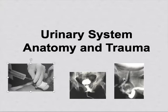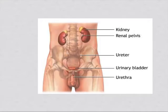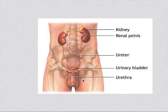Let's begin. I will talk a little about anatomy — just an overview since you already covered it. We know the anatomic structures: kidneys, ureters, bladder, and prostate, which is in males. In males there is also testes, vas deferens, and the urethra. The urethra is long in males and short in females.